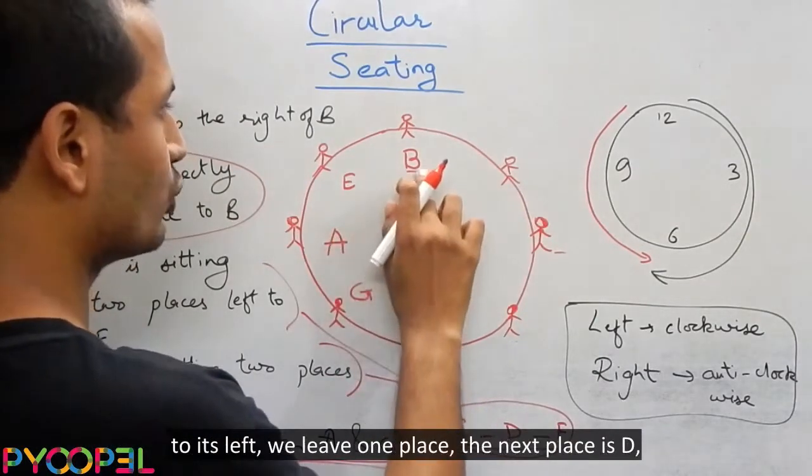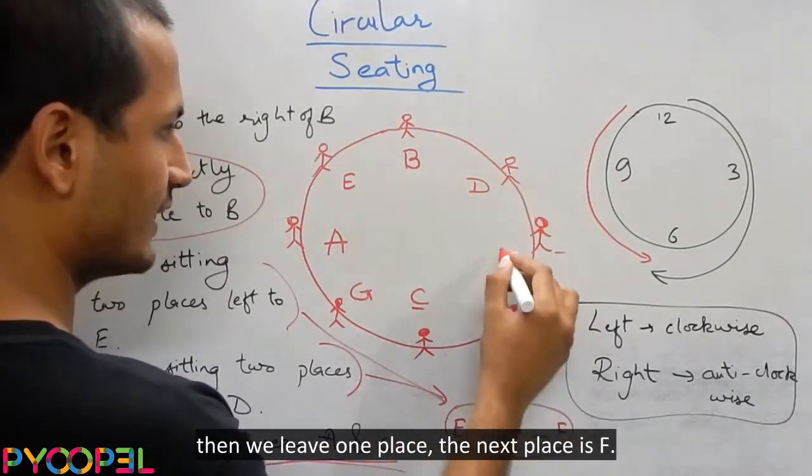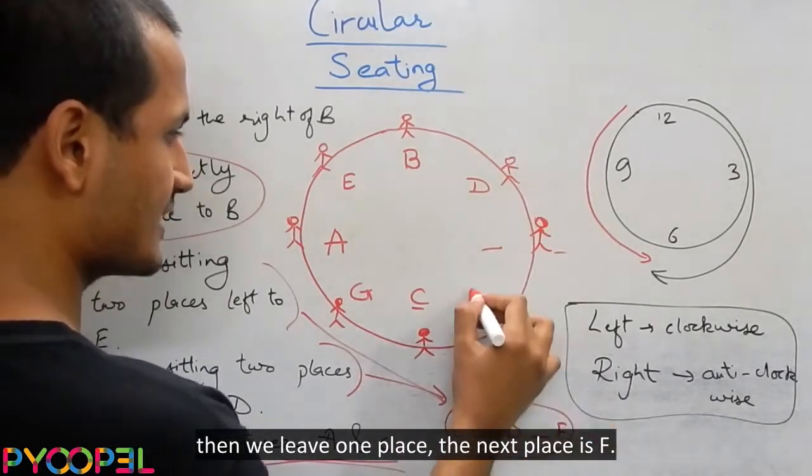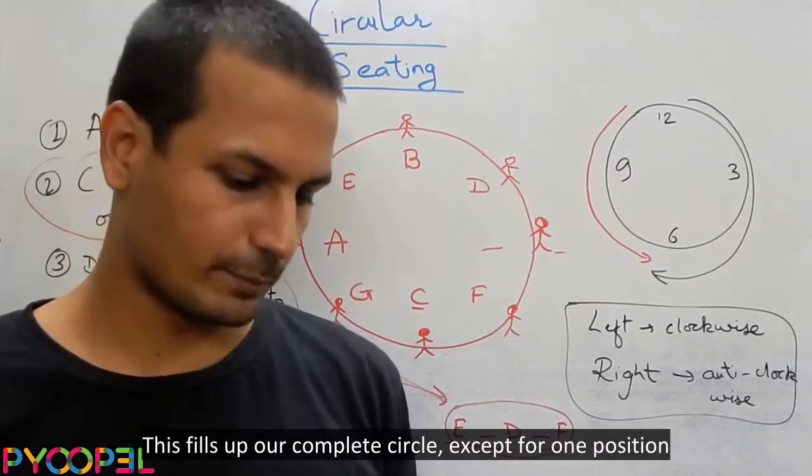The last place remaining is this. Now, E, then to its left, we leave one place. The next place is D. Then we leave one place. The next place is F. This fills up our complete circle, except for one position.